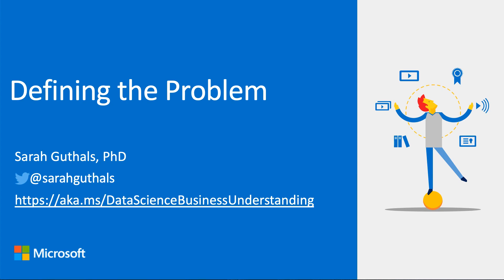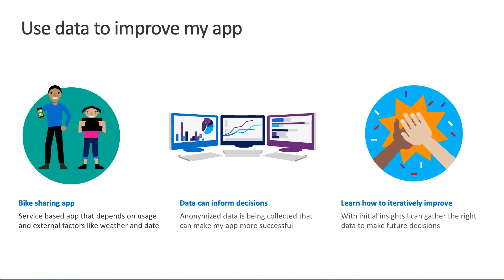The data science lifecycle made a lot of sense, and now I know that I want to define my problem before I do anything else. My app is a service-based app, which means it depends on not only usage data, but also external factors like weather and date. For example, how people rent bikes might look very different on a holiday compared to a workday. I want to use the anonymized data collected in my app as well as external factors like date and weather to make better informed decisions about how and where I place my bikes around the city.